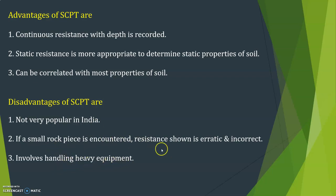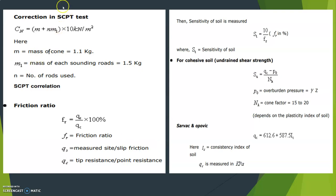The test also involves handling heavy equipment. There is a correlation in SCPT: CN is equal to M plus NM1 into 10 kN per meter square, where M is the mass of the cone (approximately 1.1 kg), M1 is the mass of each sounding rod (1.5 kg), and N is the number of rods used. Friction ratio can be calculated using: FR equals QS divided by QC into 100, where FR is friction ratio, QS is measured sleeve or skin friction, and QC is tip resistance or point resistance.